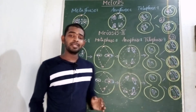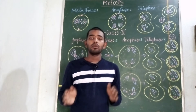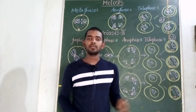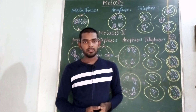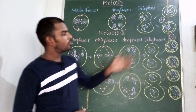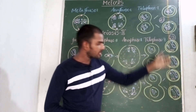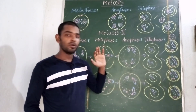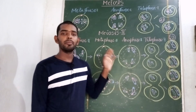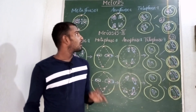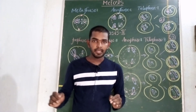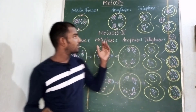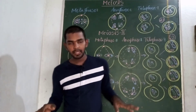Meiosis takes place in the reproductive cells or germ cells — for example, sperm cells in males and egg cells in females — resulting in the formation of four haploid cells with half the number of chromosomes. This is about meiosis I and meiosis II. I have already completed the cell cycle covering interphase, mitosis, and meiosis I and II.